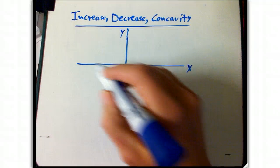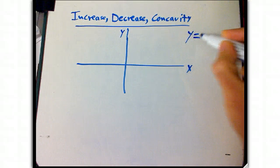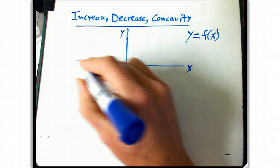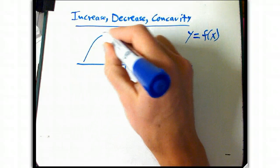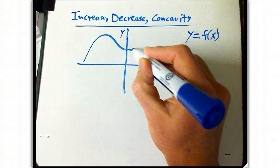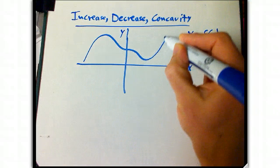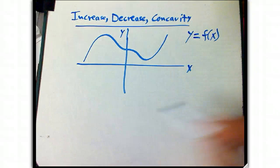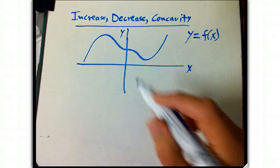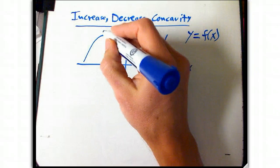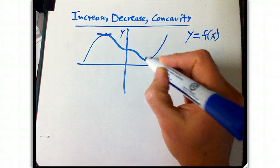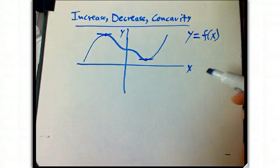If we have a graph of y equals f of x, then let's look at an example, something like this. And we want to think about what the first or second derivative might tell us here. The thing we already know from looking at max min is that we know that these points are interesting. Those are relative maxima and minima.